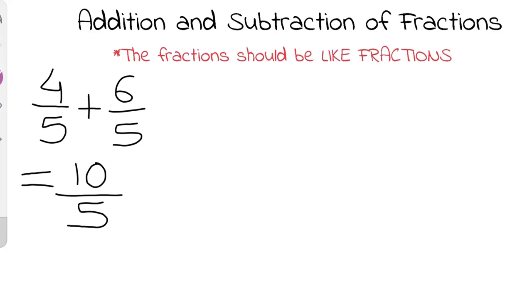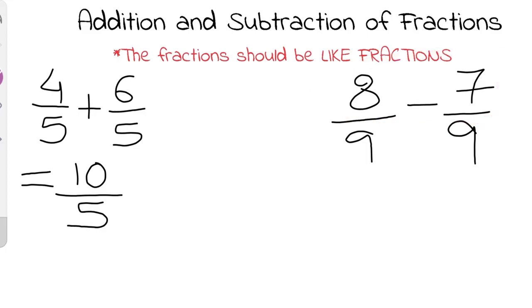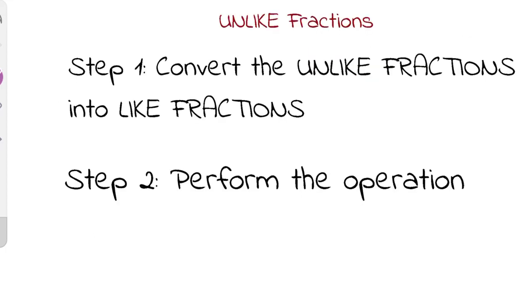Similarly, for subtraction: 8/9 minus 7/9. These are again like fractions, so we simply look at the numerators and perform the operation. 8 minus 7 equals 1, so the answer is 1/9. Easy! Now let's see what to do if the fractions are unlike fractions.